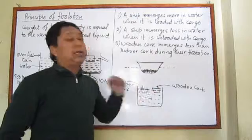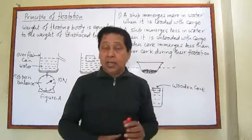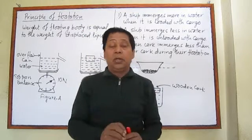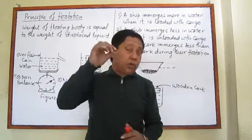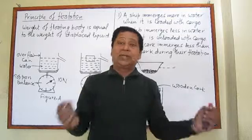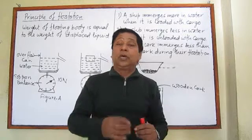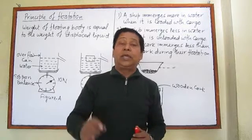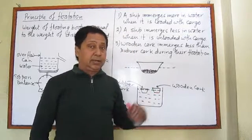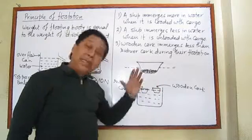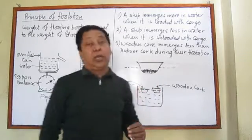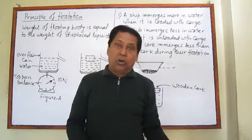In the case of the wooden cork, its weight is less, so for floatation it has to emerge less to displace less water, which equals its lesser weight. Therefore, a wooden cork emerges less while a rubber cork emerges more.